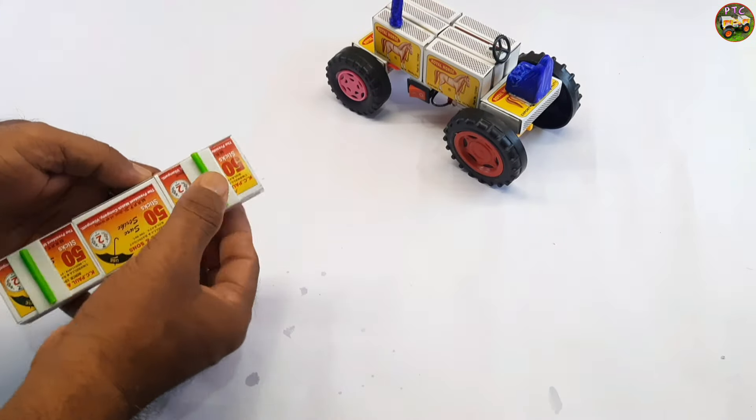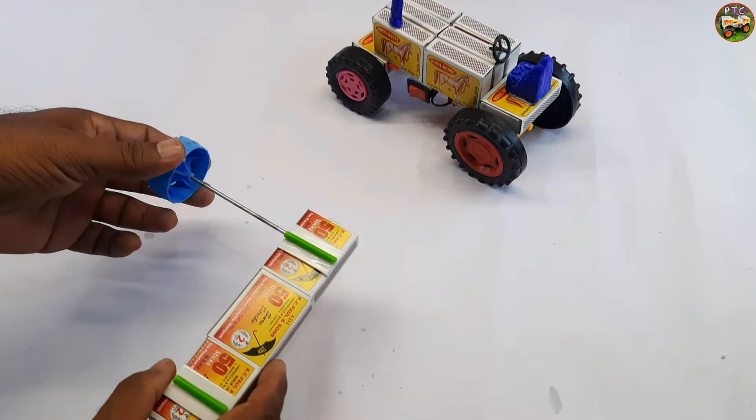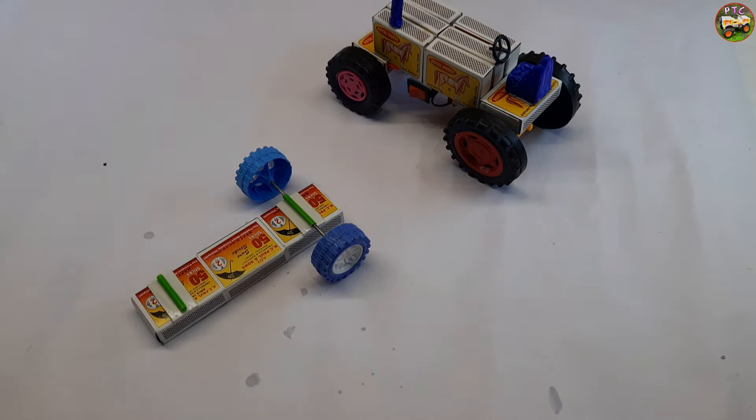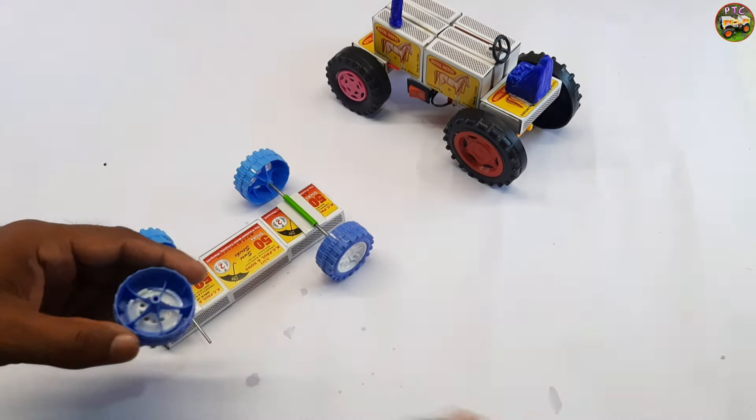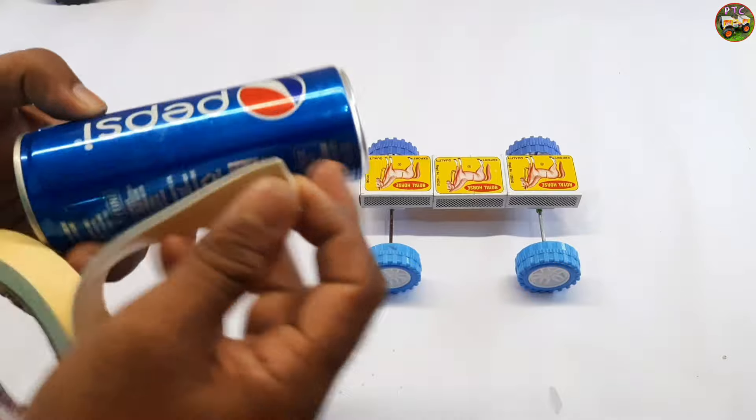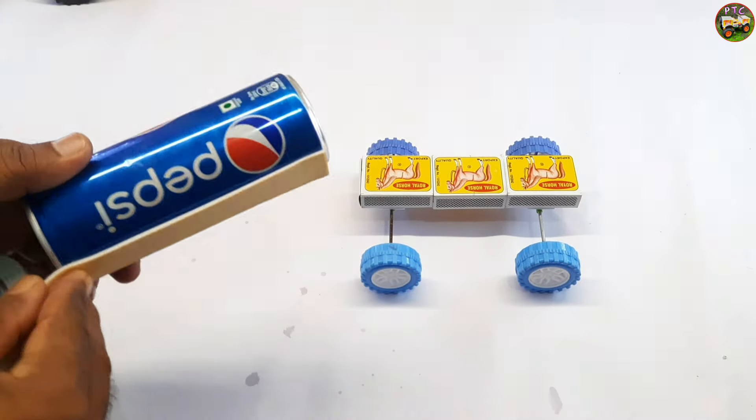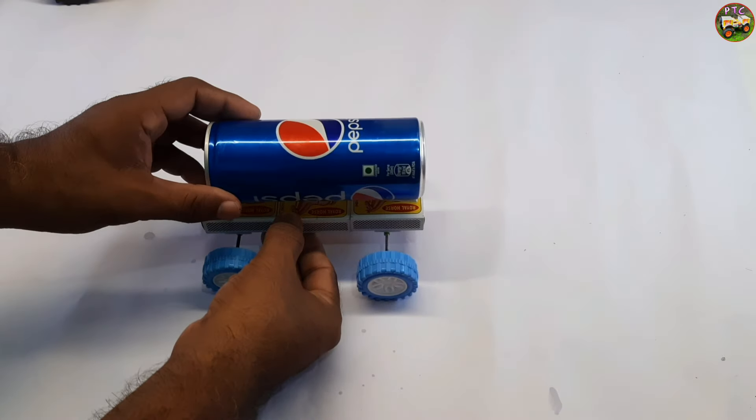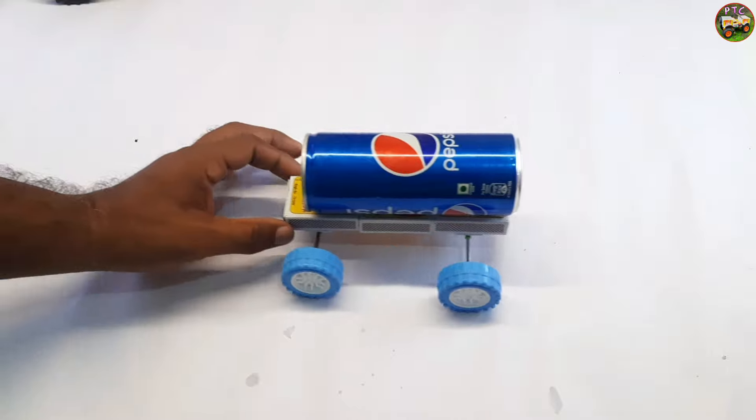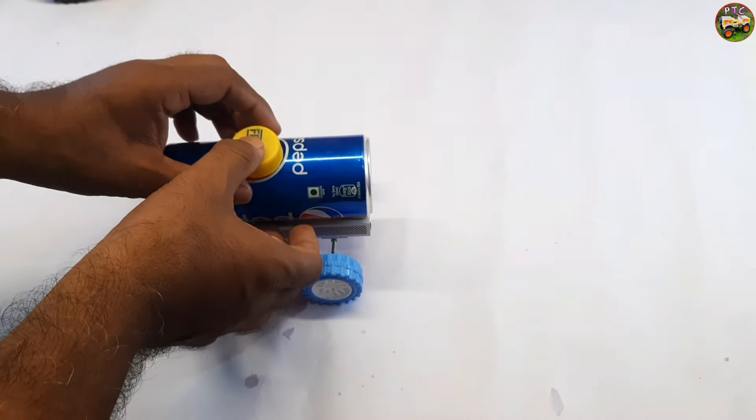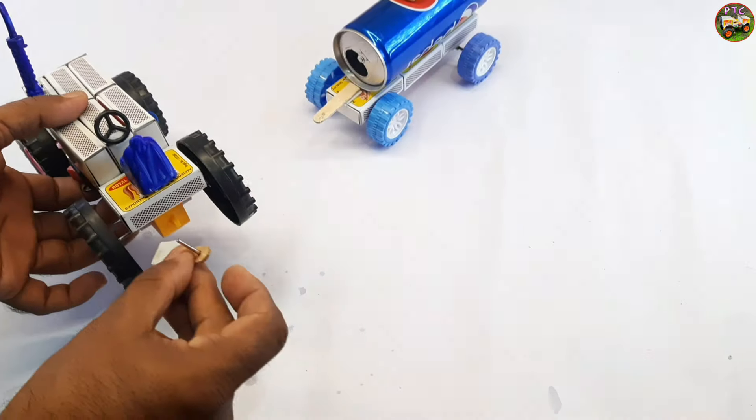These are plastic pipes. These are toy car wheels. Now set the toy car wheels. It's an empty can. I set the can. It's the bottle cap. Subscribe to the channel and stay with us.